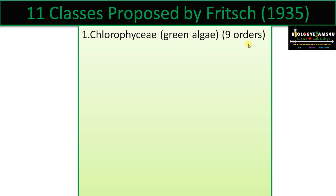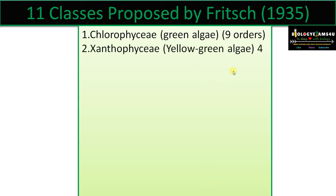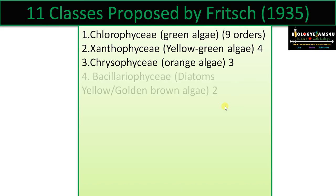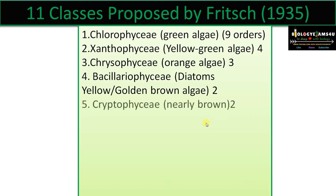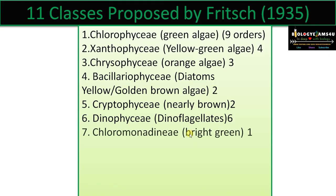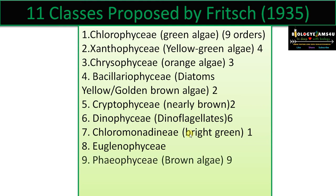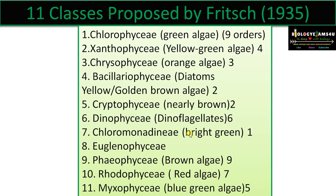Fritsch classified algae into 11 classes: Chlorophyceae (green algae, 9 orders), Xanthophyceae (yellow-green algae, 4 orders), Chrysophyceae (orange algae, 3 orders), Bacillariophyceae (diatoms, 2 orders), Cryptophyceae (nearly brown algae, 2 orders), Dinophyceae (dinoflagellates, 6 orders), Chloromonadineae (bright green algae, 1 order), Euglenophyceae, Phaeophyceae (brown algae, 9 orders), Rhodophyceae (red algae, 7 orders), and Myxophyceae or blue-green algae with 5 orders.